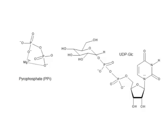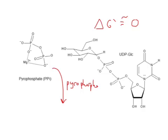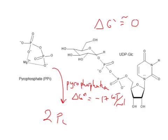The delta G for that part of the reaction is right around zero — it runs at equilibrium. Now, the pyrophosphate, on the other hand, can make this reaction go in one direction by being cleaved using a pyrophosphatase. The delta G for that is about negative 17 kilojoules per mole. A pyrophosphatase breaks a pyrophosphate into two phosphates, making 2 Pi, and that keeps our reaction going in the forward direction. As long as our pyrophosphate is being cleaved by pyrophosphatase, it drives the reaction forward.